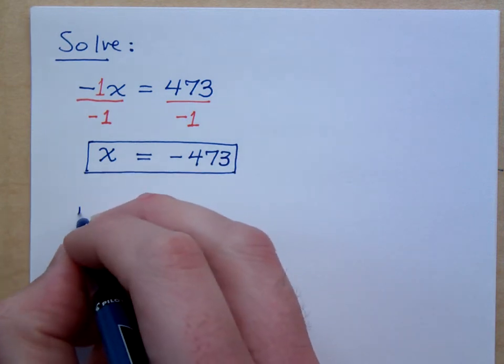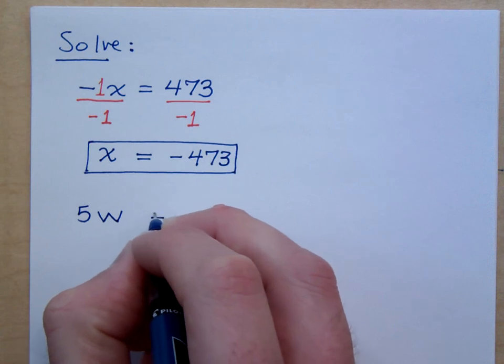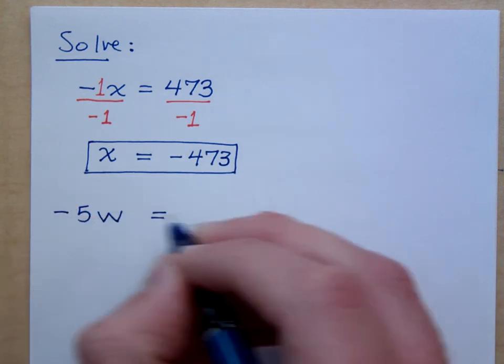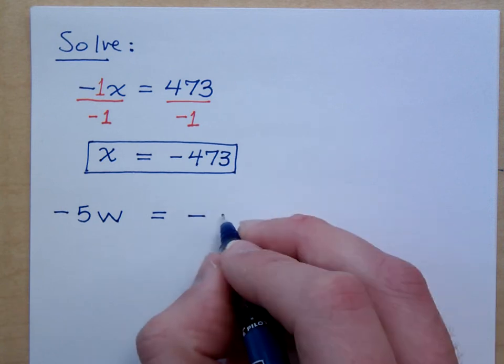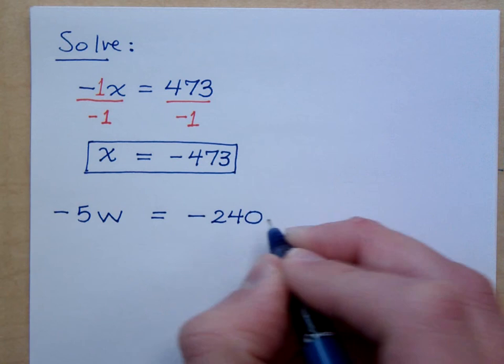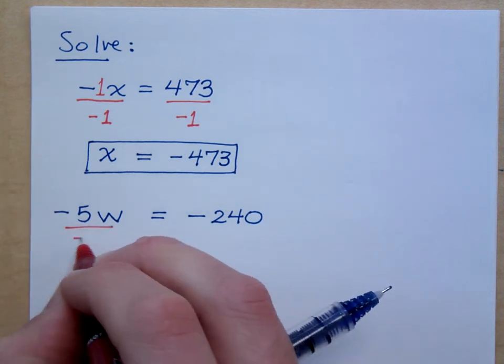You know, just because we talked about it earlier, I'm going to do this again. If I have negative 5w is equal to negative 240, what would you do to get your variable by itself? You would divide by this coefficient, which is negative 5, right?